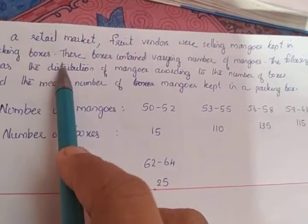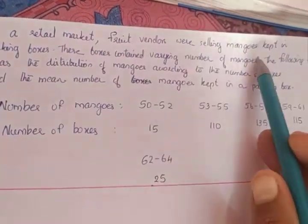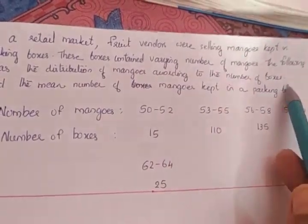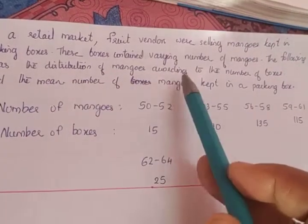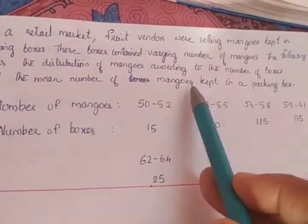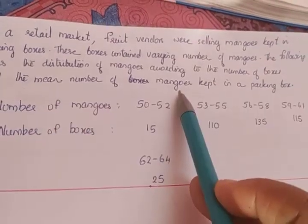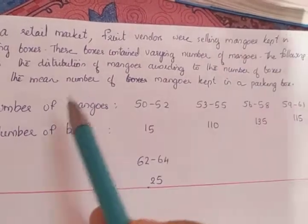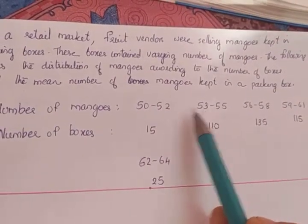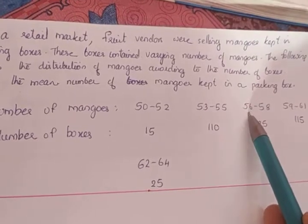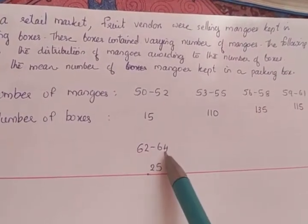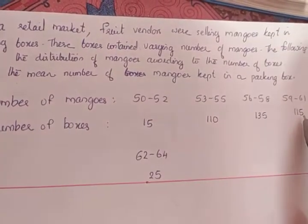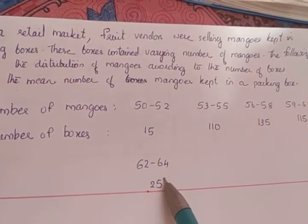The next question: in a retail market, fruit vendors were selling mangoes kept in packing boxes. These boxes contained varying numbers of mangoes. The distribution of mangoes according to the number of boxes is given. Number of mangoes: 50–52, 53–55, 56–58, 59–61, 62–64. Number of boxes: 15, 110, 135, 115, and 25.